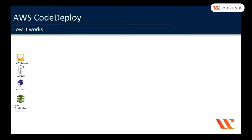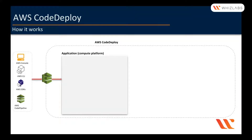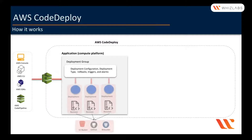With CodeDeploy, we first need to create an application where we define which compute platform we will be deploying to. Then we create a deployment group within the application. With the deployment group, we configure deployment configuration, deployment type, rollbacks, triggers, alarms, etc. Then, based on this deployment group, we can create multiple deployments and point each deployment to a specific revision — which is nothing but the code we are going to deploy — which could be in an S3 bucket, GitHub, or Bitbucket.